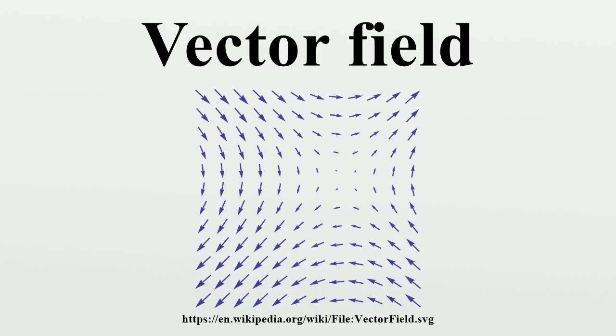Vector fields are thus contrasted with scalar fields, which associate a number or scalar to every point in space, and are also contrasted with simple lists of scalar fields, which do not transform under coordinate changes.